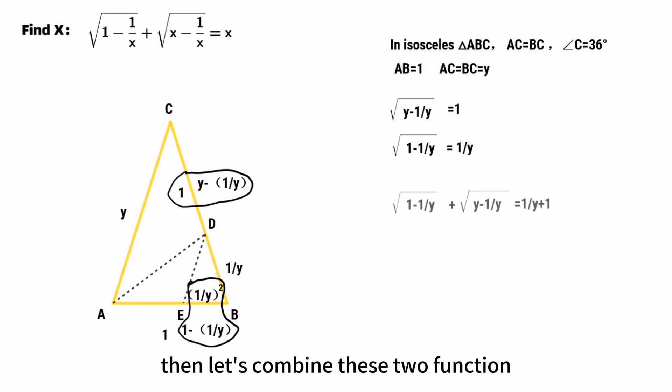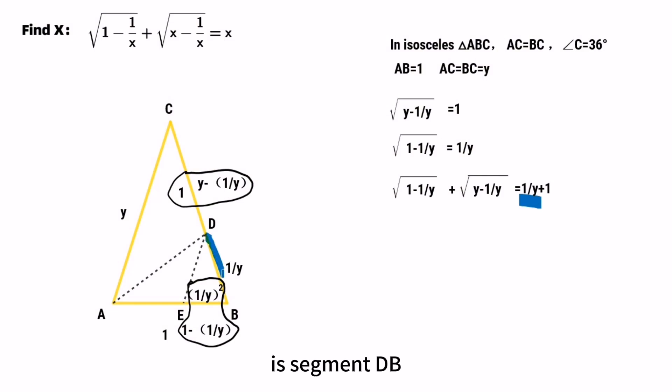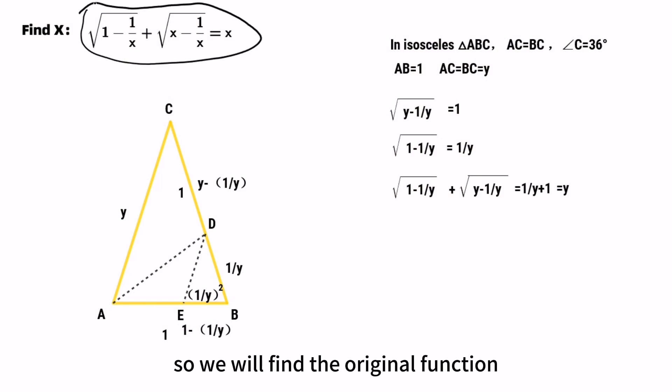Then let's combine these two functions. 1 over Y is segment DB and 1 is segment CD. So 1 over Y plus 1 equals AC, which equals Y. So we will find the original function.